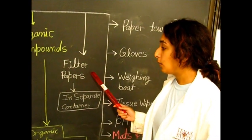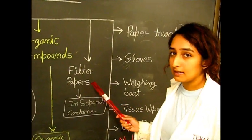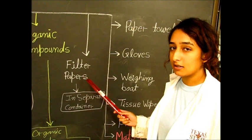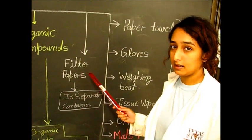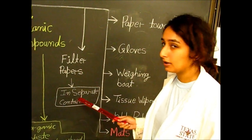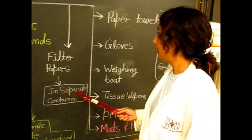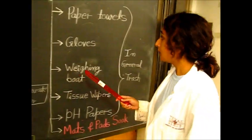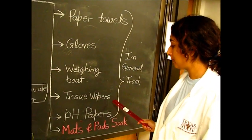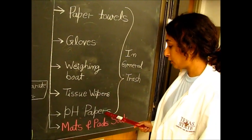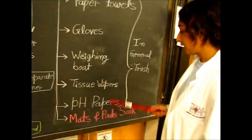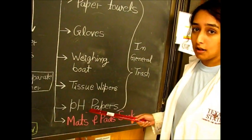For filter papers, we gently rub off any material left on the filter paper and place it in a solid waste container located in the fume hood. For the filter paper itself, we place that in a separate container labeled filter paper. For paper towels, gloves, weighing boats, tissue wipes, and pH papers, we place them in a general trash can located throughout the lab.